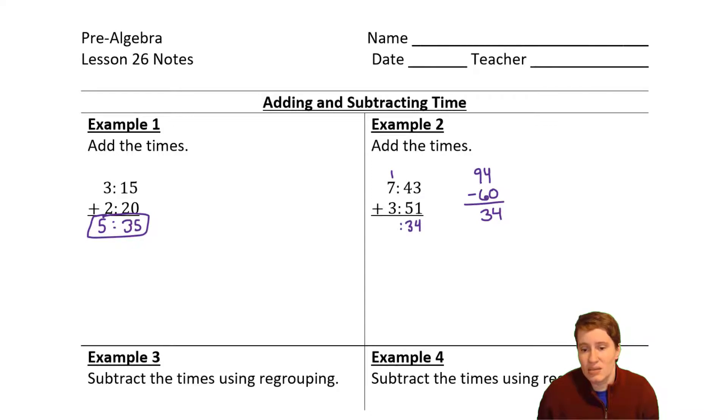So this would be 34 minutes. And then one plus seven plus three, which is 11, 11 hours, 34 minutes. So it's this idea of 43 plus 51 gives me something bigger than 60. So I have to add an hour to my hour column.